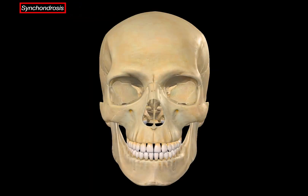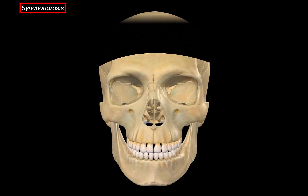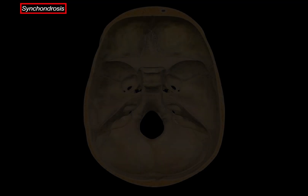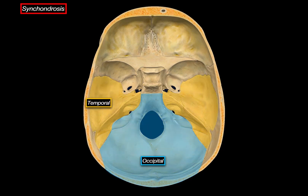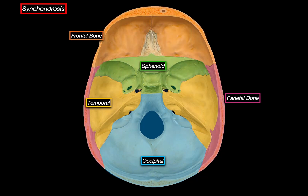Here we see the front side of the skull. Let's remove the skull cap and look at the base from this perspective. We can identify the occipital bone at the back, temporal bones lateral to it, parietal bones, sphenoid bone, frontal bone at the front, and the ethmoid in the middle.